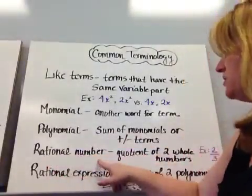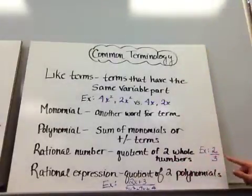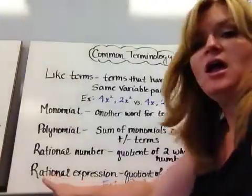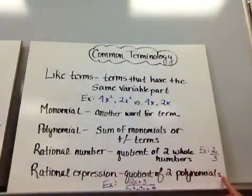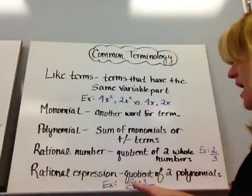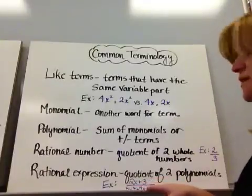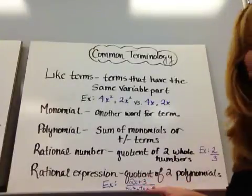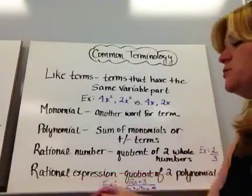A rational number is the quotient of two whole numbers. Example with that would be 2/3. That's a rational number. A rational expression is the quotient of two polynomials. So if I took, for an example here, I have (2x plus 3) over (5x squared plus 7x plus 4). Those two are polynomials divided or a quotient, therefore it's a rational expression.